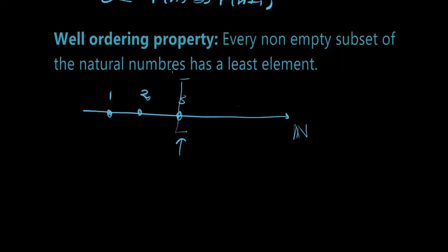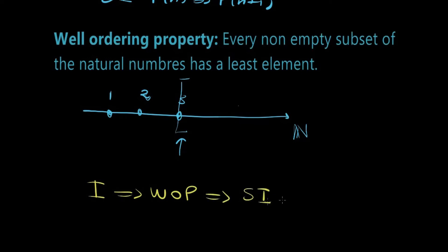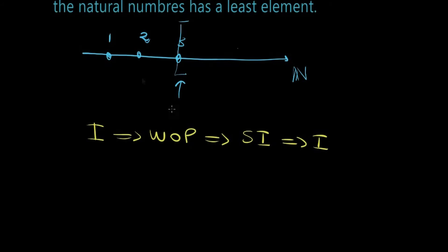To prove the well-ordering principle, we need to believe in the induction principle. What we're going to prove is that the principle of induction implies the well-ordering property, the well-ordering property implies strong induction, and strong induction implies regular or weak induction. This is important because all of this has to do with the axiom of choice, though I won't get into that as it's very advanced mathematics.